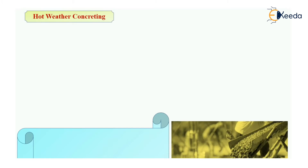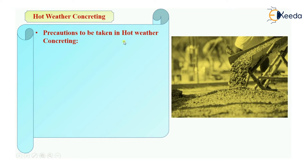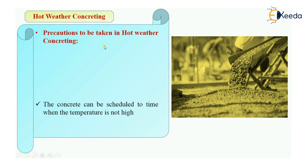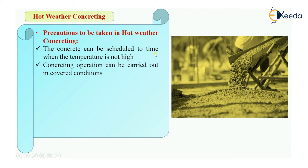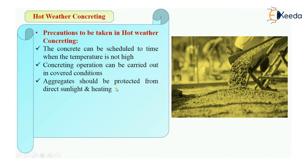These are the effects of hot weather concreting. Now, what are the precautions you can take? First, you can schedule the concreting operation at a time when the temperature is not high — for example, in the evening or early in the morning — so there will be less temperature compared to noon. Then, concrete operations can be carried out in covered conditions using sheds. Aggregates should also be protected from direct sunlight by keeping them in a shed.